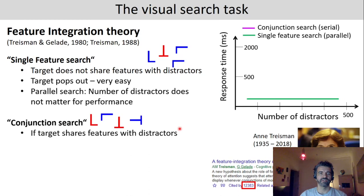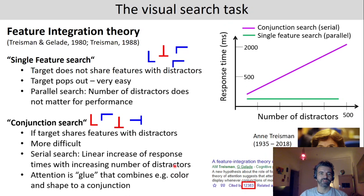Sometimes however you need to apply what is called conjunction search. If a target shares features with the distractors then it doesn't really pop out. And if you increase the number of distractors then the search time will increase. This is because now there is a serial search going on because we cannot just process everything at once, we need to go through all the single items until we find the target. And attention according to this Feature Integration Theory is the glue that combines the different features.